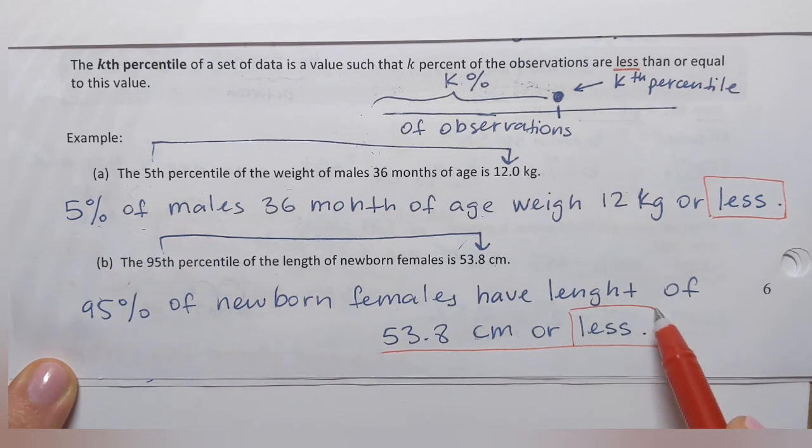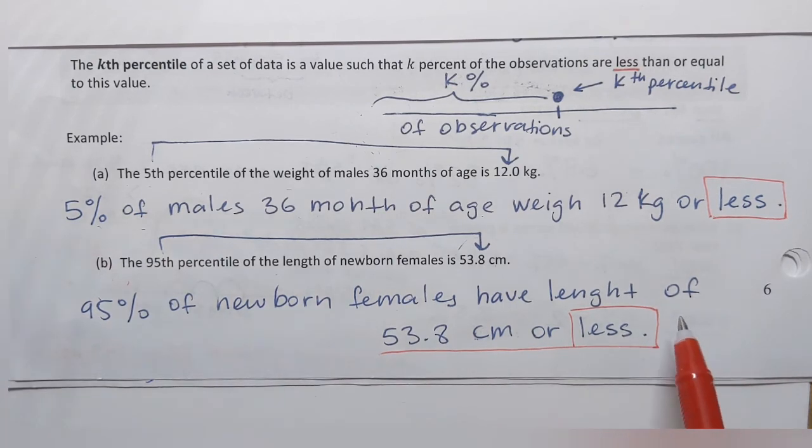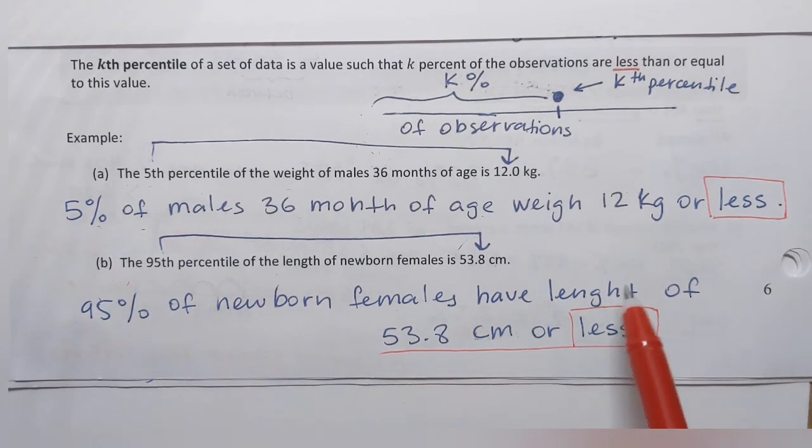Again that keyword or less. So percentile of a certain data value tells us the percent of observations that are less than or equal to the one we're looking at or we're referring to, the ones being described by the percentile. So that's the way to interpret percentiles.